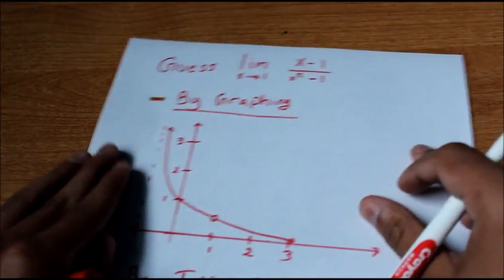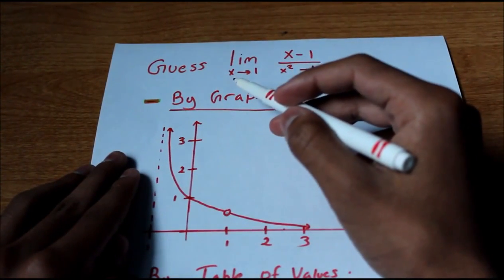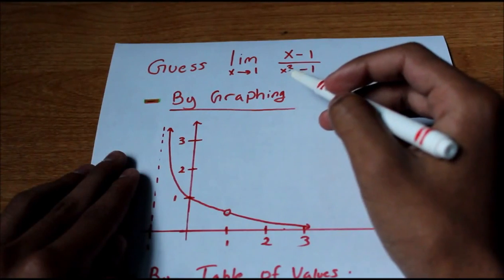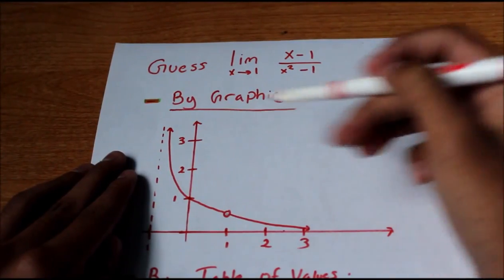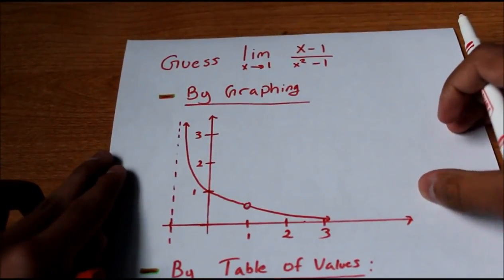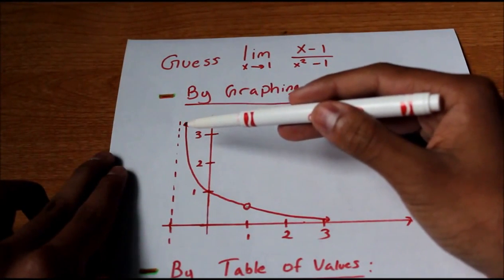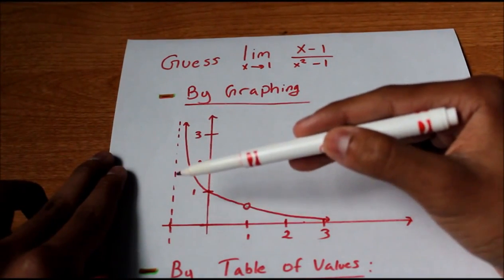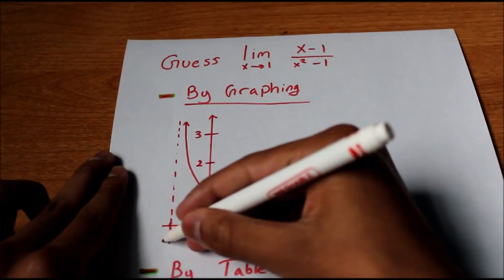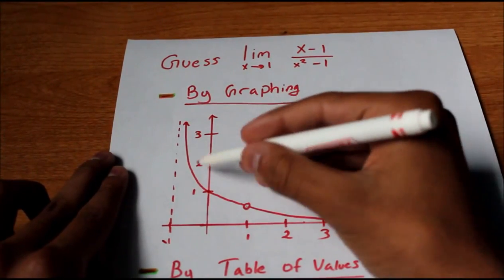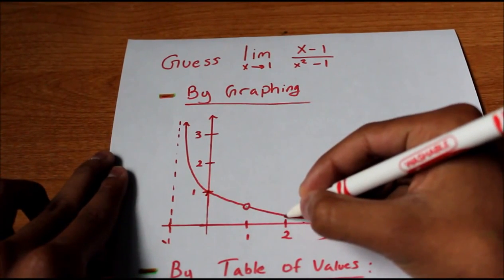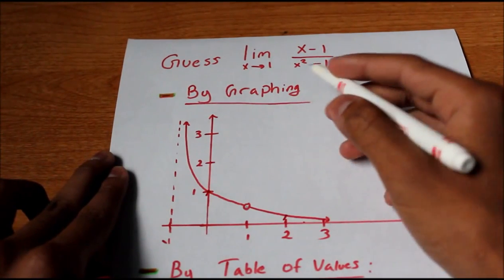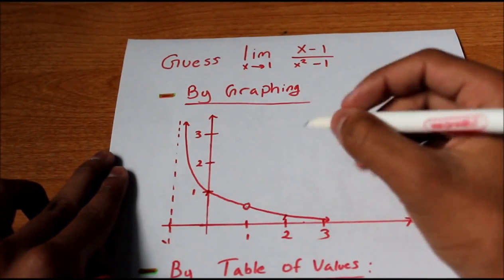Now let's do an example problem. Let's say I want you to guess the limit as x approaches 1 of x minus 1 over x squared minus 1. One way we can do it is by graphing. Here I have the function graphed. You can see the function has a vertical asymptote at x equals negative 1. We're going to look at what these points lead up to. At x equals 2, you'd plug it in and get 1 over 2 — so one fifth.